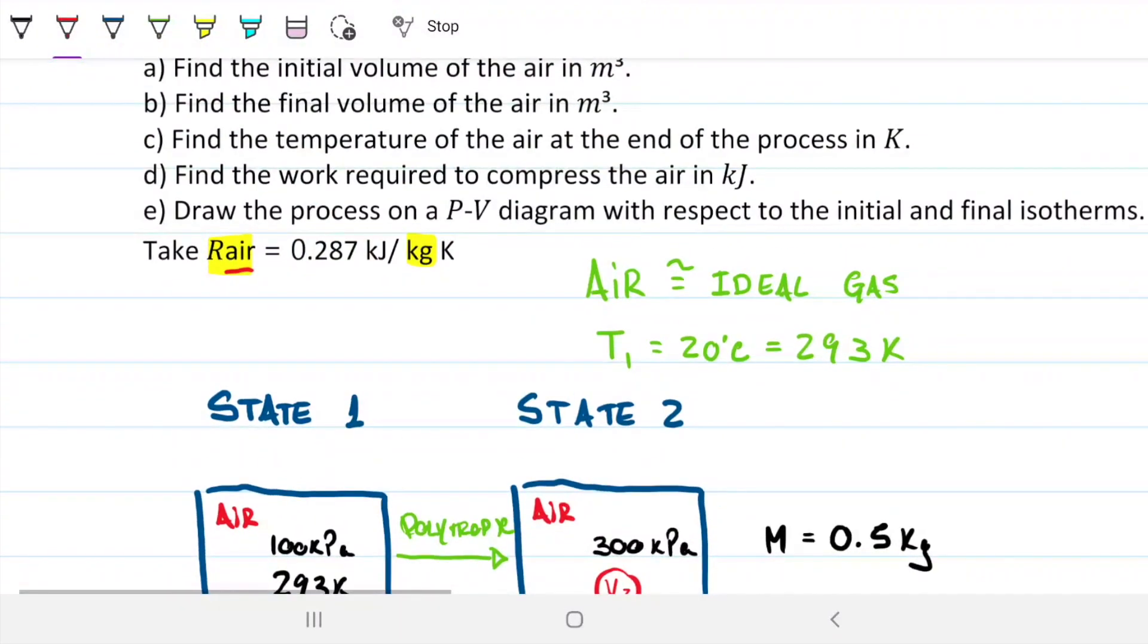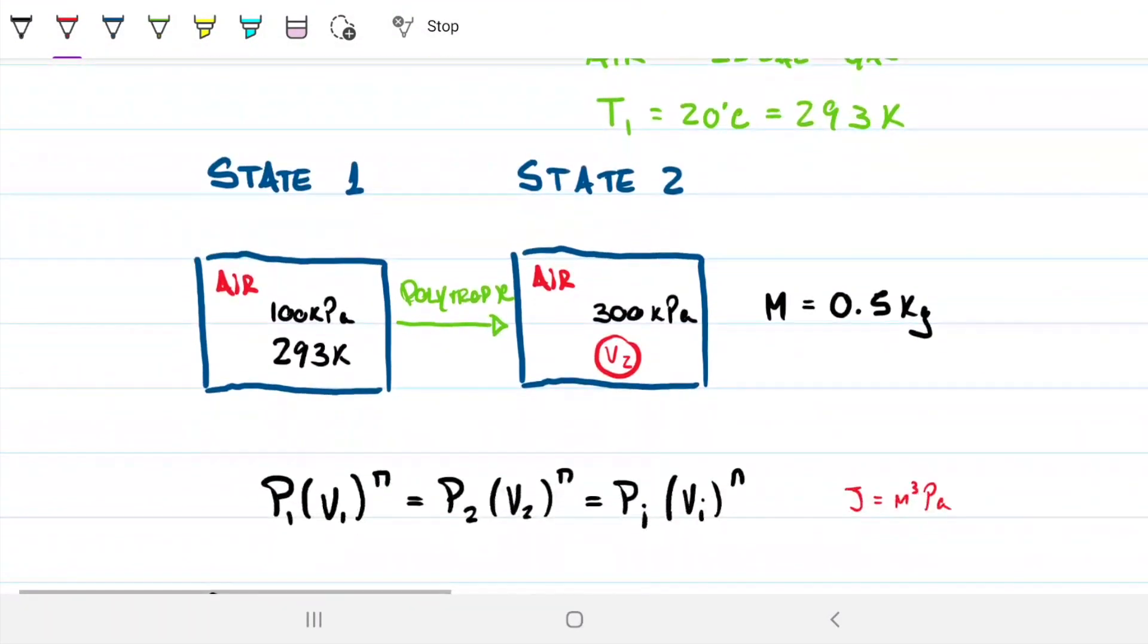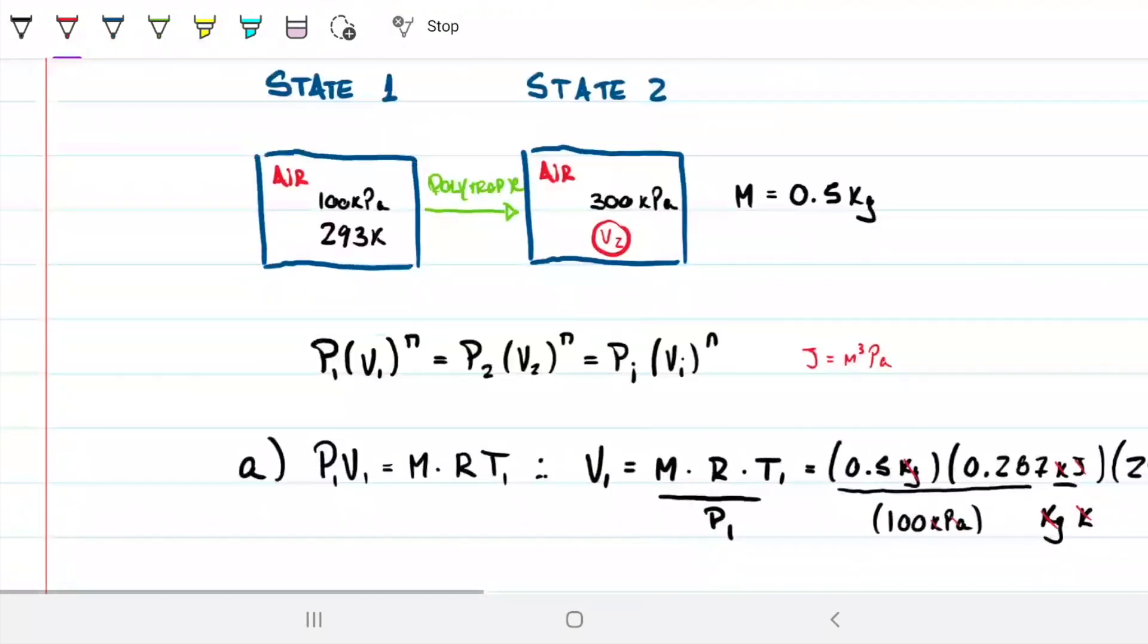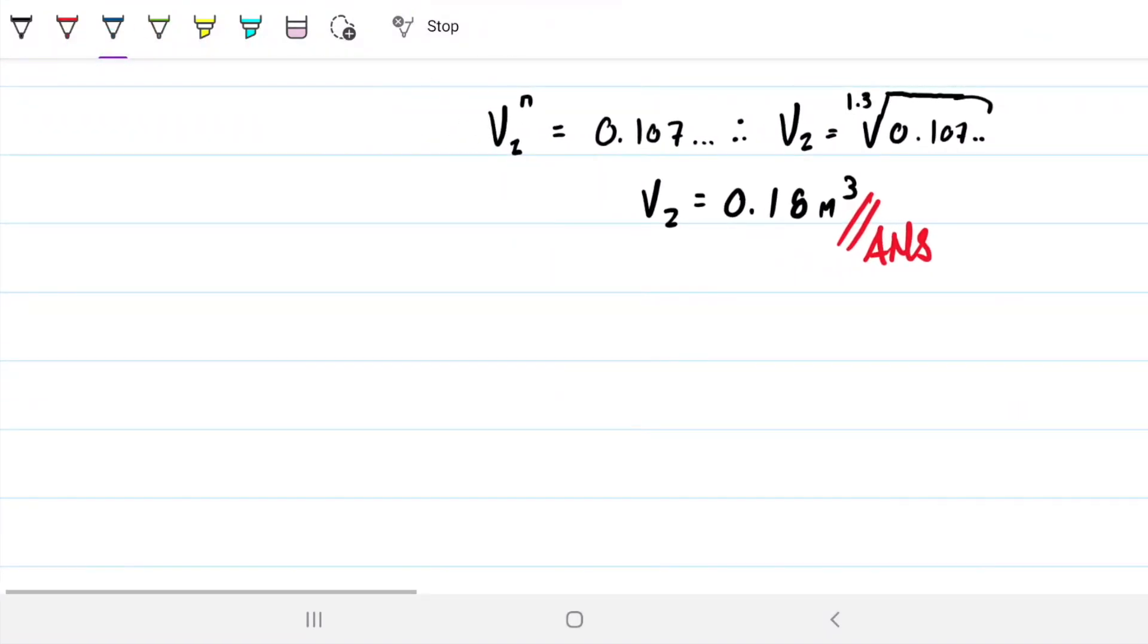We check part C: what's the temperature at the end of the process in Kelvin? Now that we have two properties - we have P₂ and V₂ - this is easy. Because PV = mRT, we can use that to find T₂. So part C: what is T₂? Well, P₂V₂ = mRT₂, therefore T₂ = P₂V₂/(mR). We have everything, so we can just plug and play.